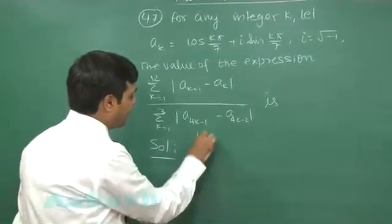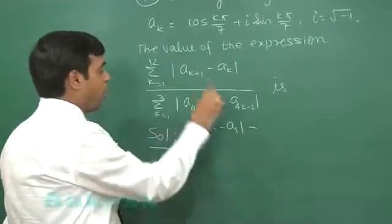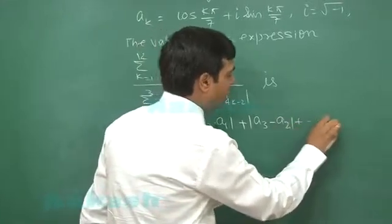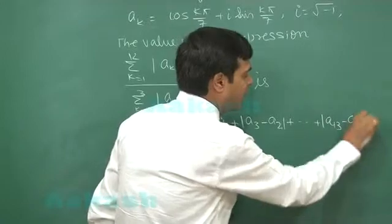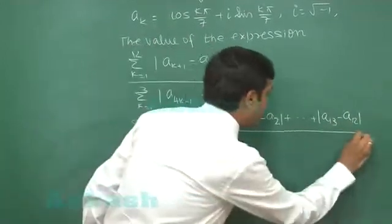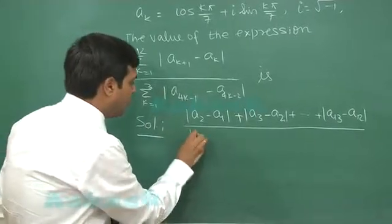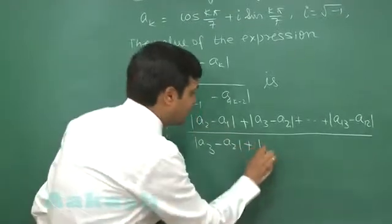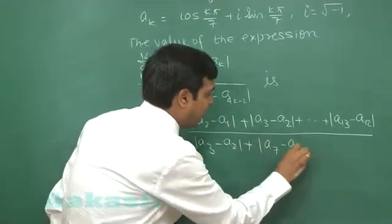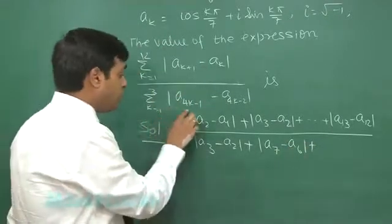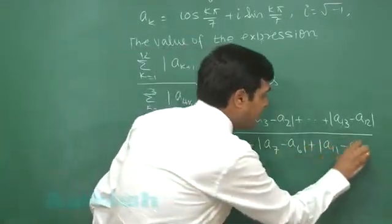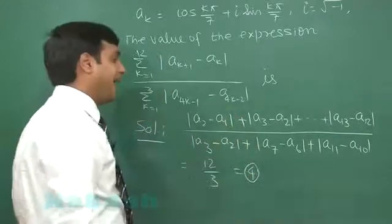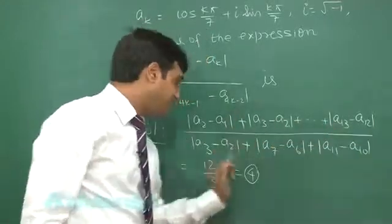When we substitute the value for k, it is mod(a_2 minus a_1), mod(a_3 minus a_2) and so on till mod(a_13 minus a_12) divided by, when we put 1, it is mod(a_3 minus a_2) plus, when we put 2, this is mod(a_7 minus a_6) plus. On substituting 3, mod(a_11 minus a_10).